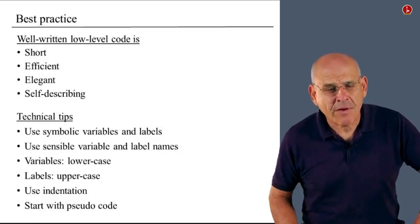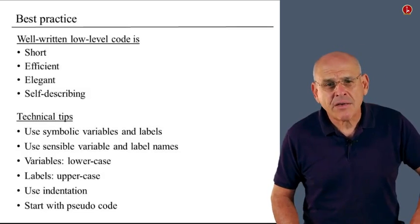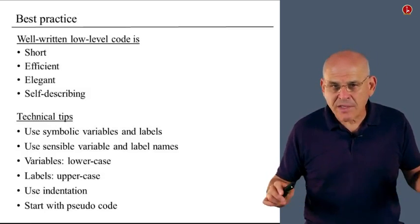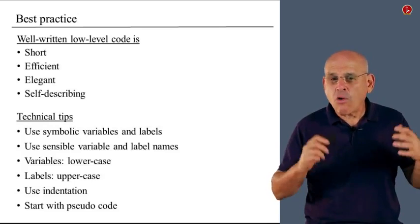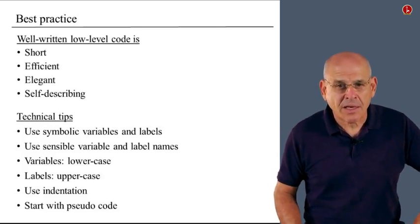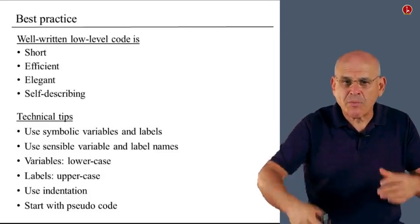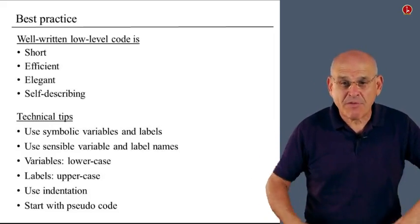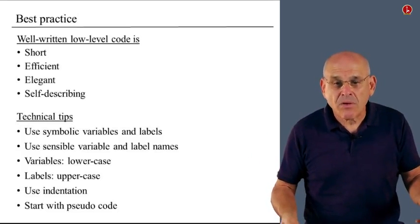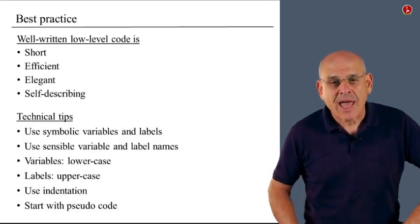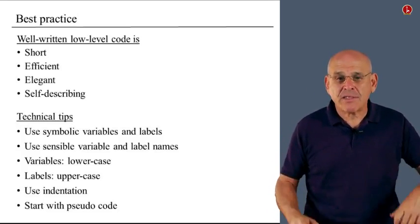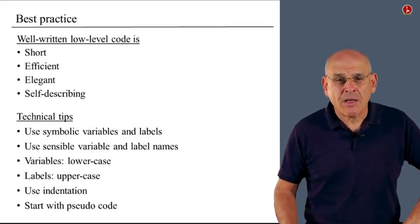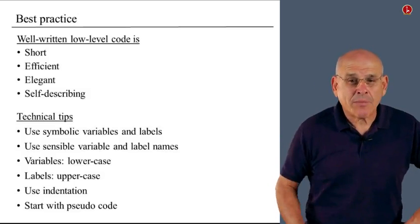Now, here are some very important technical tips that will make your life easier. First of all, you must use symbolic variables and labels. Otherwise your programs will be helplessly and hopelessly complex and cryptic. So if you want to go to somewhere in your program, use a label. If you want to store something repetitively, make up a variable name. When you're done writing the program, look at it and make sure that you don't see any actual addresses there. You have to make sure that everything is symbolic. This is one very important virtue of well-written machine language programs.